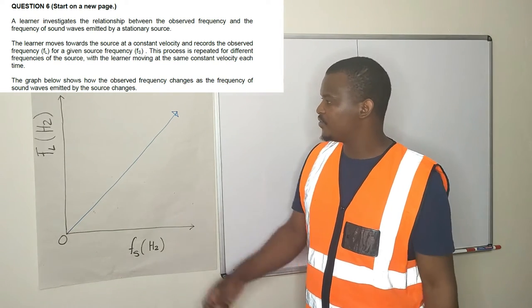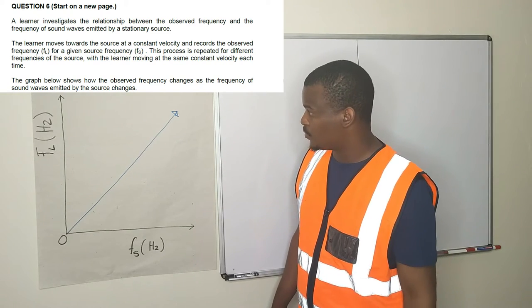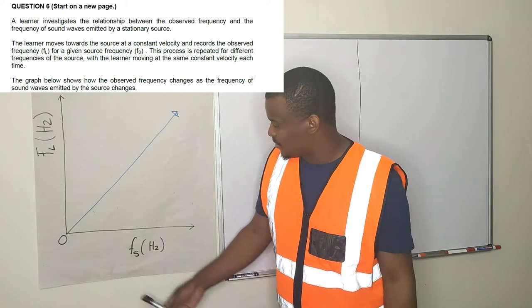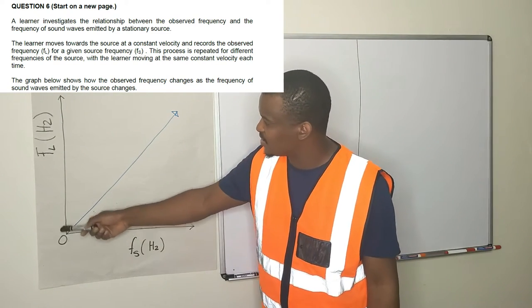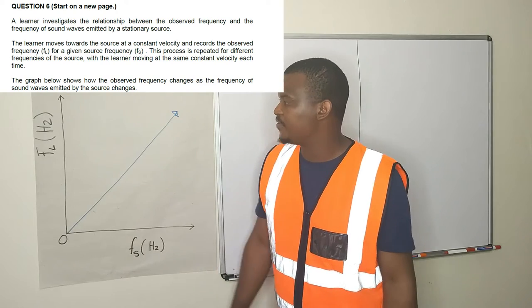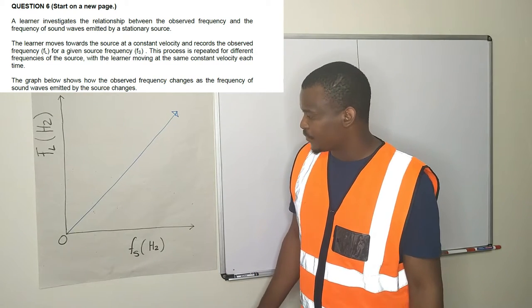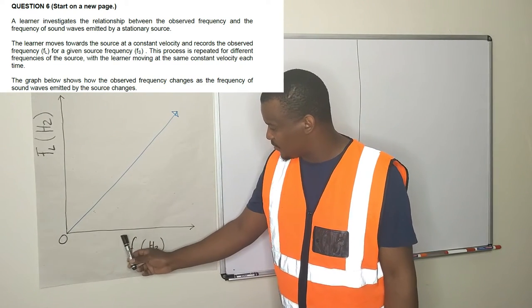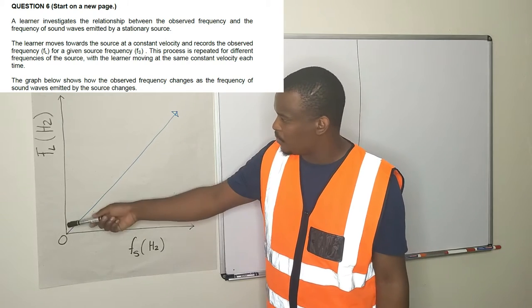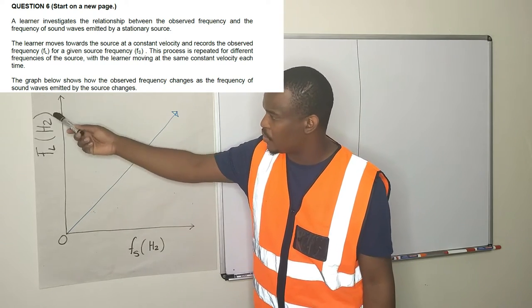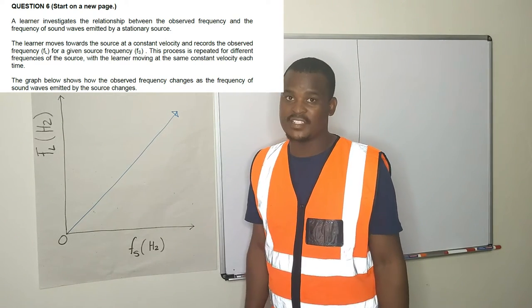So you have your graph here. This axis is the frequency of the source and this axis is the observed frequency. You can see that as they were increasing the frequency of the source, the observed frequency was going up — the frequency of the listener was increasing as well.